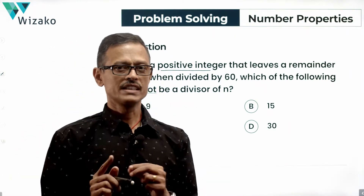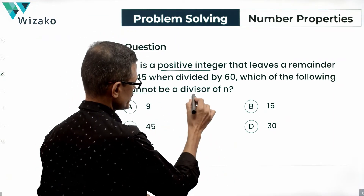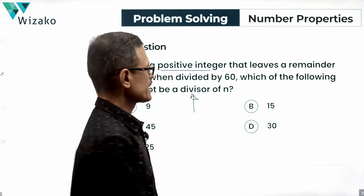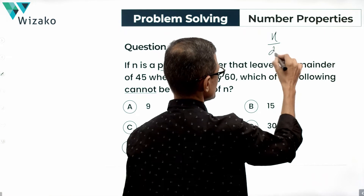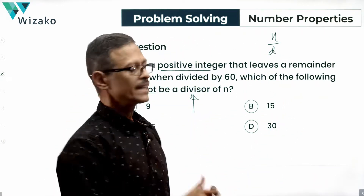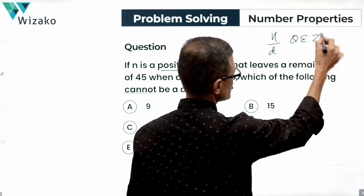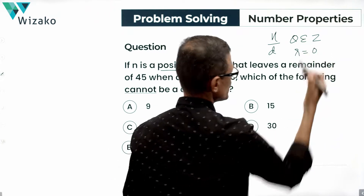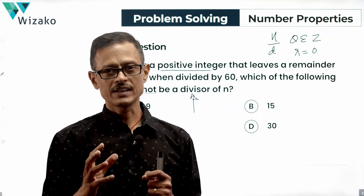Before we set about solving this question, let's get clarity on one point. When the GRE states that we are talking about one of these numbers being a divisor of n — if that number is D — when it says D is a divisor of n, it means that D will perfectly divide n, meaning the quotient of this division is going to be an integer. The remainder of this division is equal to 0, which is when we call D to be a divisor of n.